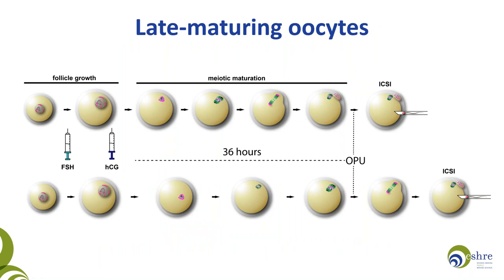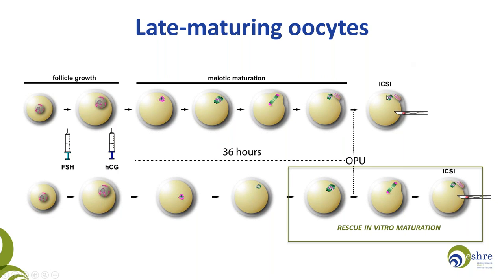Adjusting the time of sperm injection to the developmental stage of the oocyte is particularly important for oocytes that extrude their polar body in vitro. In general, oocytes are expected to complete maturation within 36 hours post-HCG triggering injection. However, in slow responders, the whole pool of oocytes might be developmentally delayed — meaning that after 36 hours you will have a batch of immature oocytes. In cycles with very few mature M2 oocytes available for fertilization, individually timed ICSI of these late-maturing oocytes can serve as a rescue strategy and an alternative to cycle cancellation.